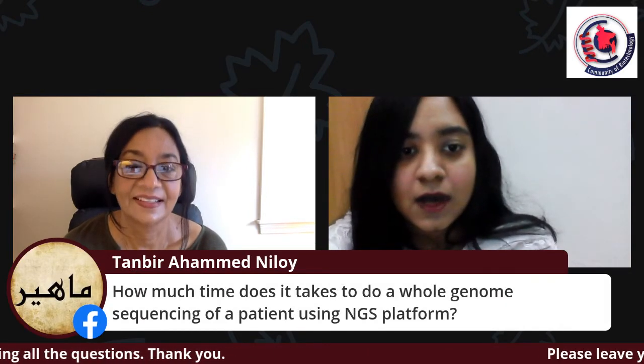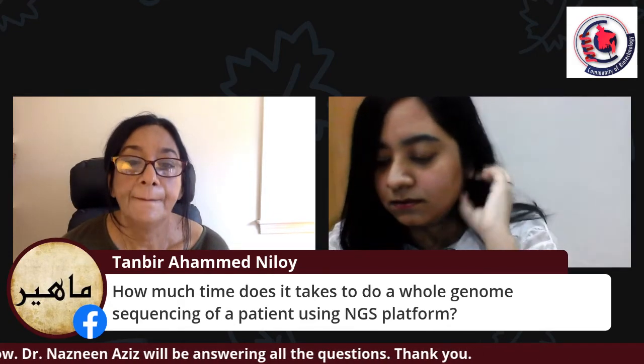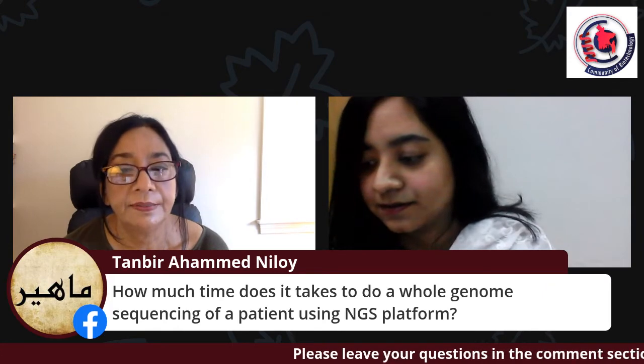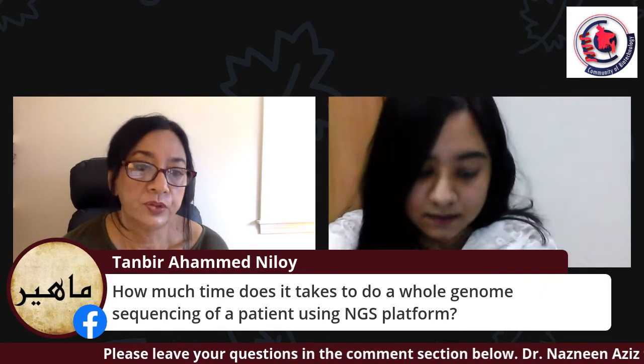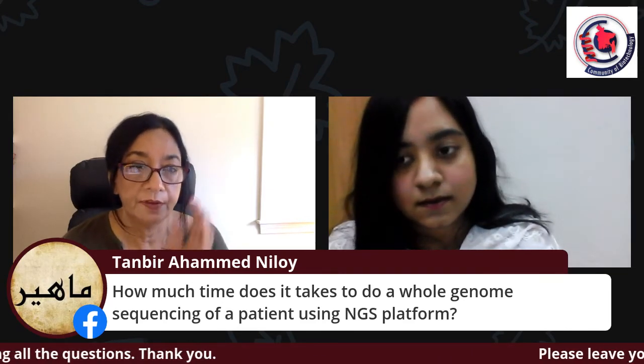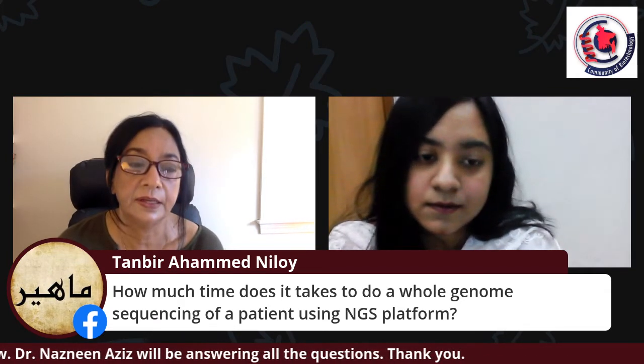Question: how long does whole genome sequencing of a patient take using an NGS platform? Whole genome sequencing covers about 6 billion bases (3 billion base pairs), which is a large volume of data. It typically takes about two weeks — from receiving the patient's DNA to generating a clinically interpreted report. You can rush it in about one week. For clinical use, however, you generally don't need whole genome sequencing; a gene panel or exome sequencing is sufficient.